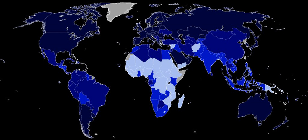The Inequality Adjusted Human Development Index is a measure of the average level of human development of people in a society once inequality is taken into account. Countries in the top quartile of HDI with a missing IHDI include Taiwan, New Zealand, Singapore, Hong Kong, Liechtenstein, Brunei, Qatar, Saudi Arabia, Andorra, United Arab Emirates, Bahrain, and Kuwait.